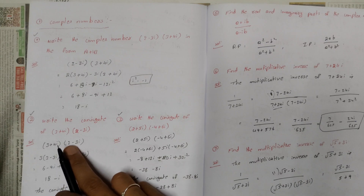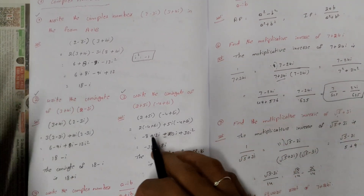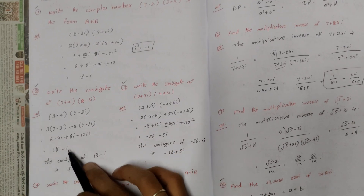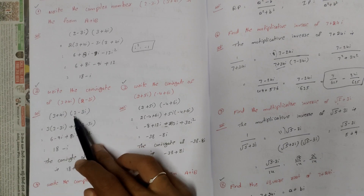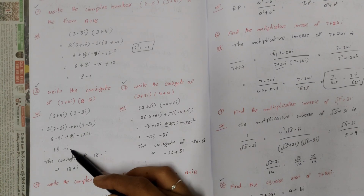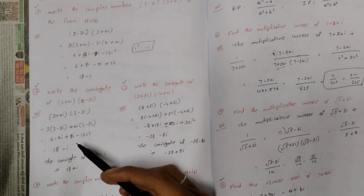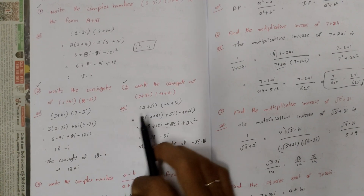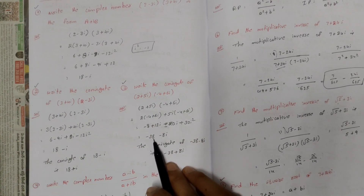Next, write the conjugate. Conjugate questions are repeated and very important. Use the a+ib formula. Second question: write the conjugate of (3+4i)(2−3i). Multiply it — same process as the first question. We get the complex number 18−i. The conjugate of 18−i is 18+i — just change the sign of the imaginary part. Also: write the conjugate of (2+5i)(−4+6i); multiply to get −38−8i, then conjugate is −38+8i.